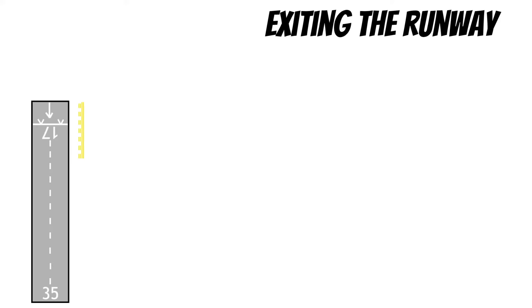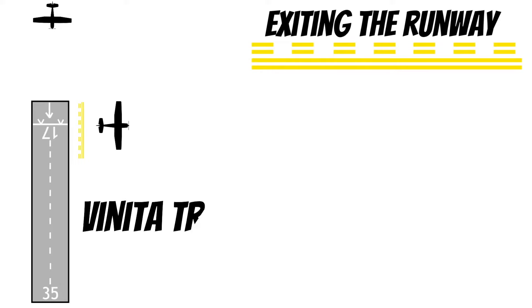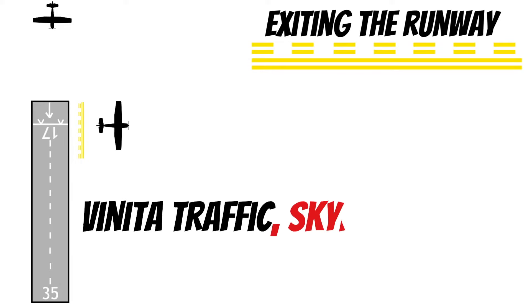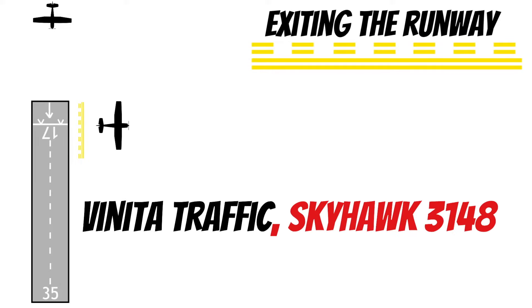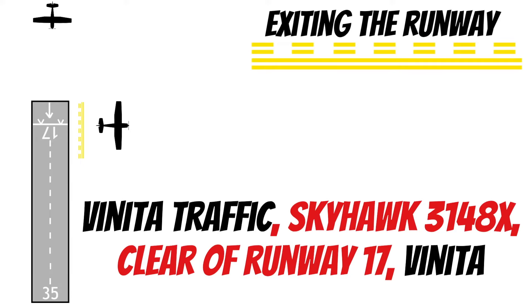Last but not least, you should make a radio call after you exit the runway — after you pass the VFR hold line. If someone's behind you on final, that allows them to know for sure that you're off the runway. Here's what that call would sound like: 'Veneta traffic, Skyhawk 3148 X-ray, clear, runway 1-7, Veneta.'